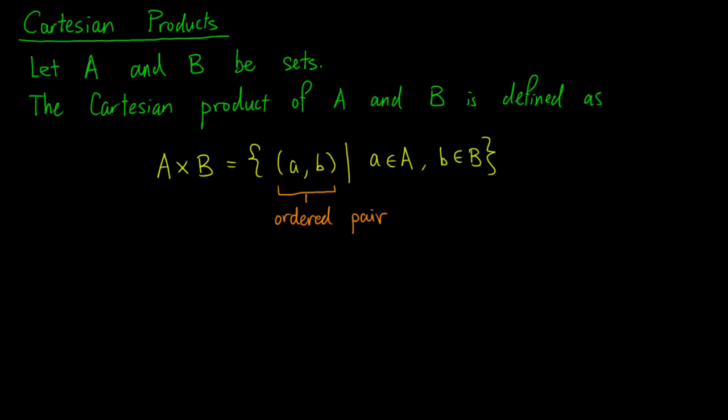Here, (a, b) is known as an ordered pair, and it represents the form of a general element of a Cartesian product.